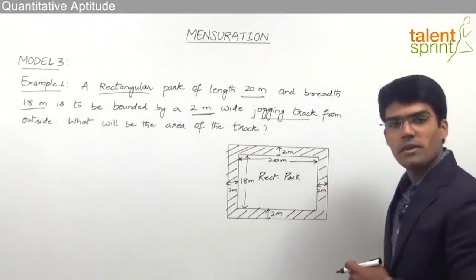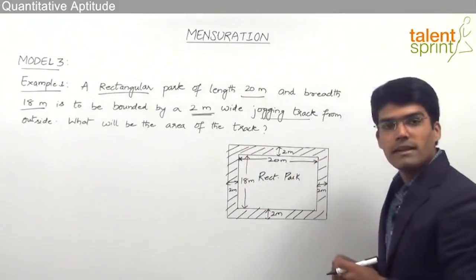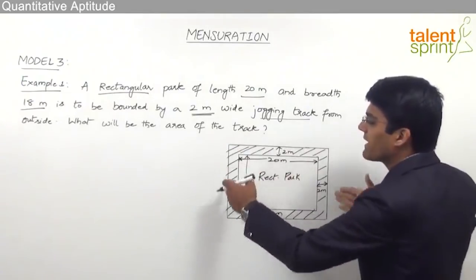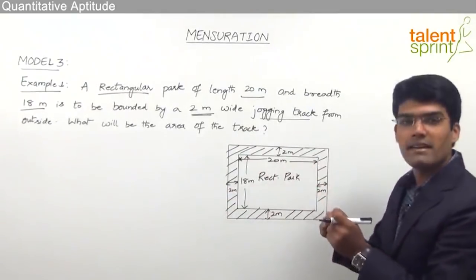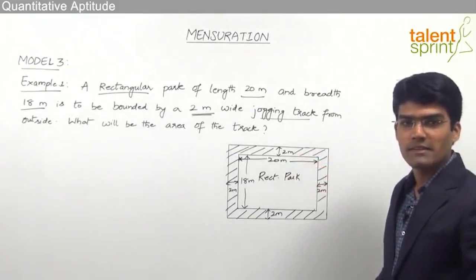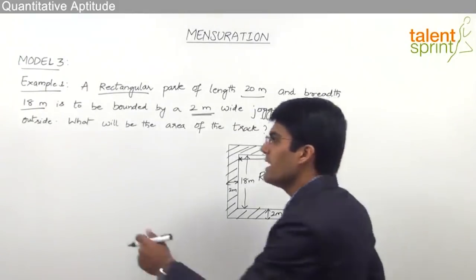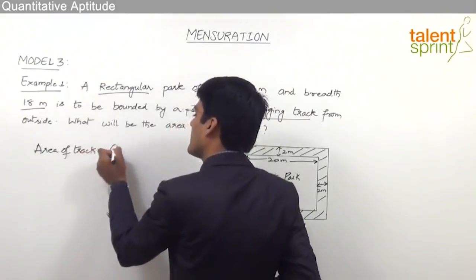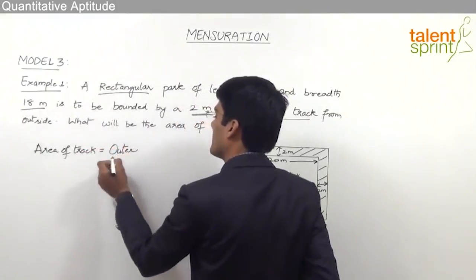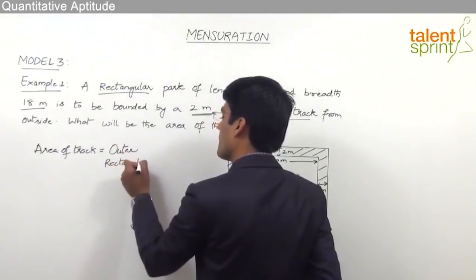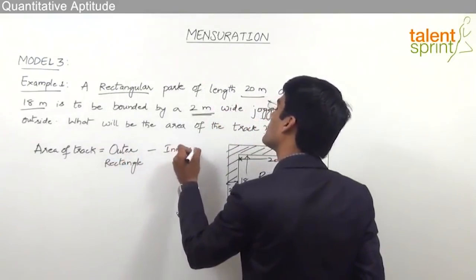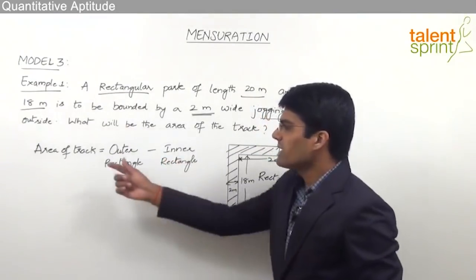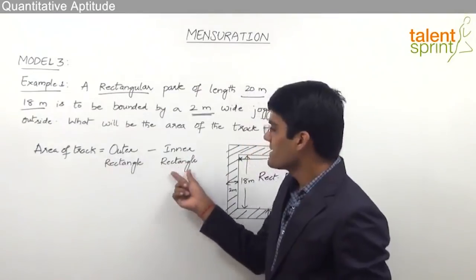The shaded area can be calculated by taking the outer rectangle area minus the inner rectangle area. From the complete outer rectangle, if we subtract the inner rectangle, the remaining area will be the area of the jogging track. So the area of the track — the required area — will be outer rectangle minus inner rectangle.